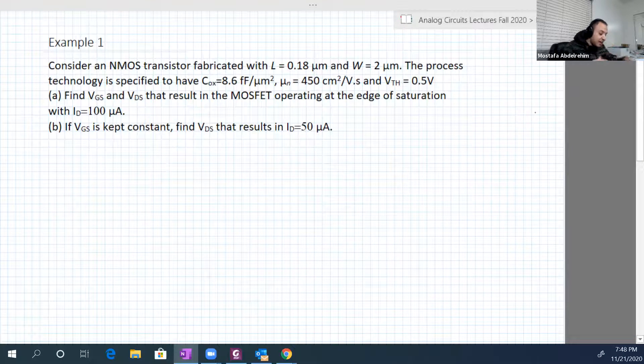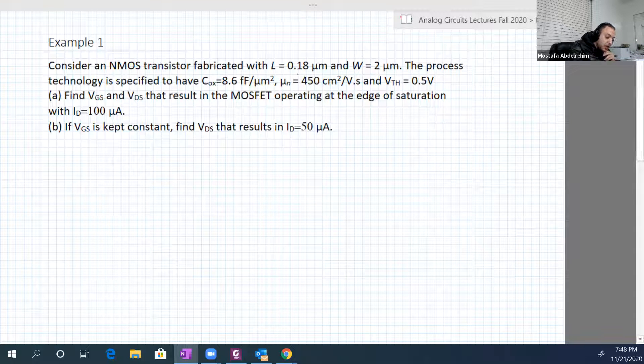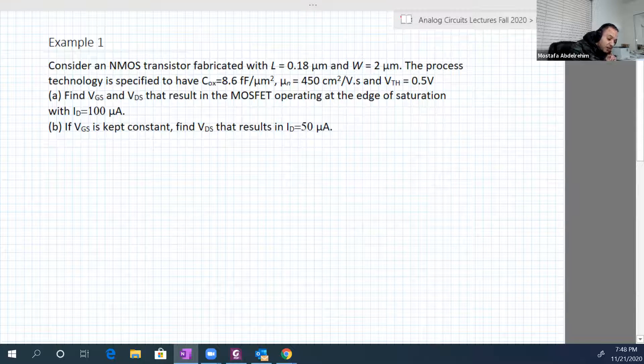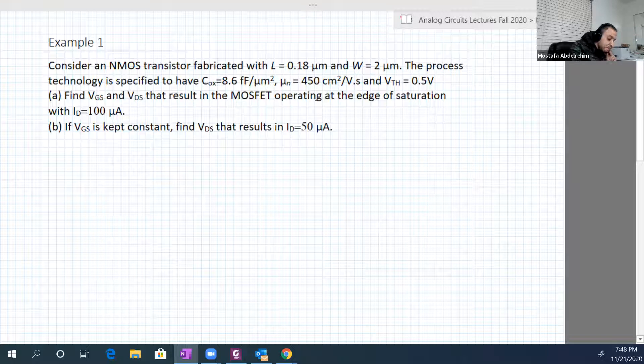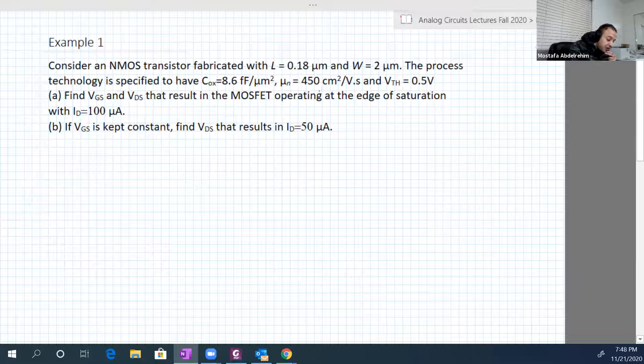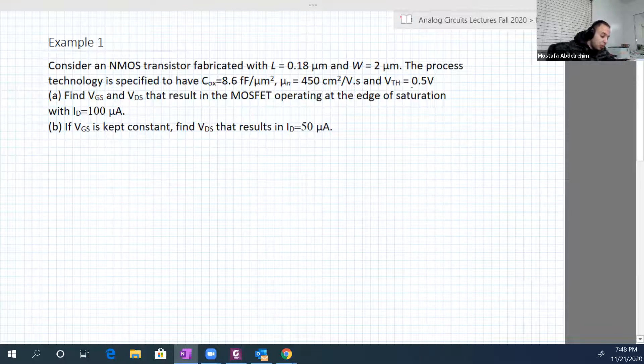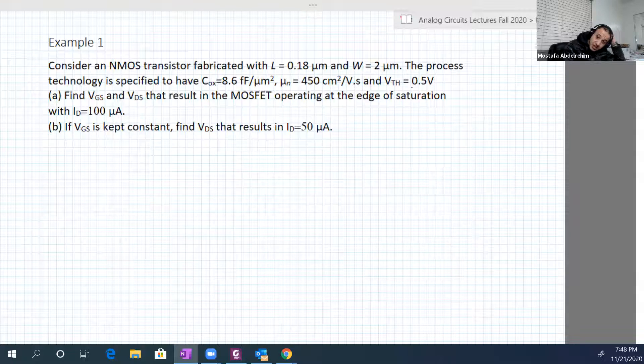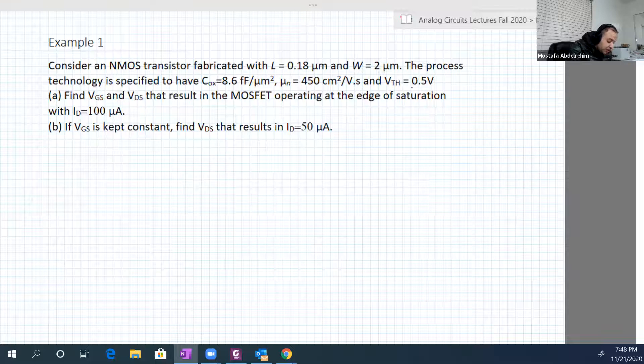Consider an NMOS transistor fabricated with a length equal to 0.18 micrometers and width equal to 2 micrometers. When fabricated, Cox was 8.65 farad per micrometer square, μn mobility was 450 centimeter square per volt second, and V threshold was 0.5 volt. Find VGS and VDS that result in the MOSFET operating at the edge of saturation with ID equal to 100 microamperes.